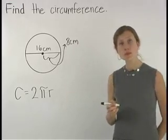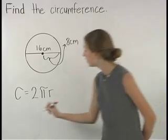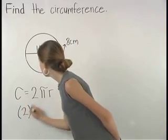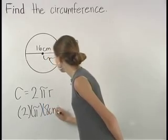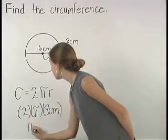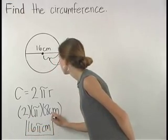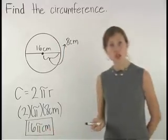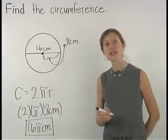So we can plug in 8 centimeters for r in the formula. So we have 2 times pi times 8 centimeters, which is equal to 16π centimeters. So the circumference of the circle shown here is 16π centimeters.